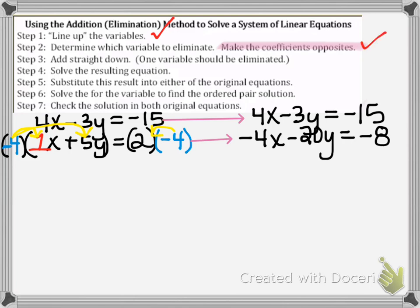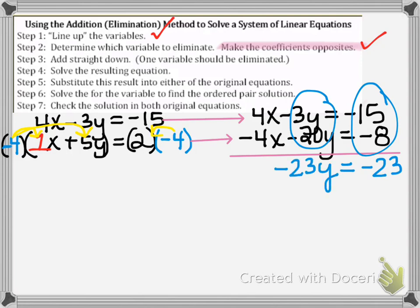So now I've completed step 2. Now I'm ready for step 3 where I'm going to add straight down. And this is where all my work is going to pay off because I'm going to eliminate my x terms. So first I'm going to add my constants together. Negative 15 plus negative 8 is negative 23. Then I'm going to add my y terms together. Negative 3y plus negative 20y is negative 23y.